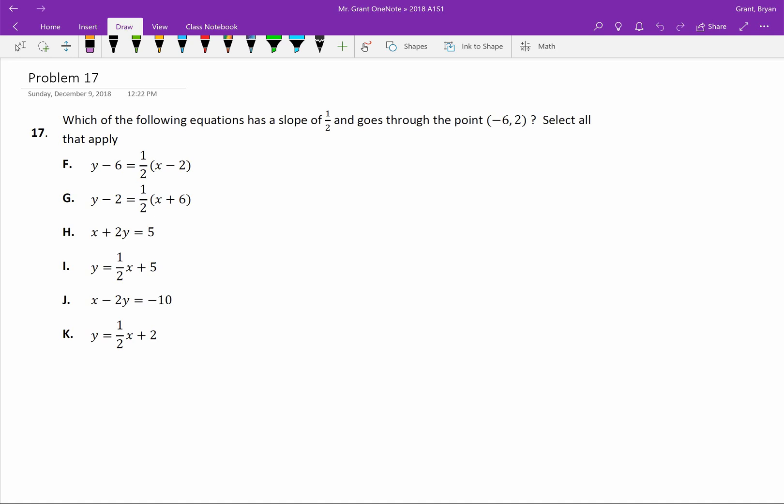Alright, welcome back to reviewing for your Algebra 1 Semester 1 Final Exam. We're working problem 17 or whatever number you might have for this year. Just make sure the problem looks like the one on the screen. They say which of the following equations has a slope of one-half and goes through the point negative six comma two.